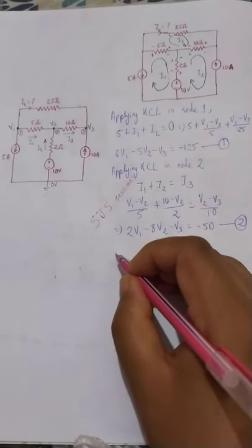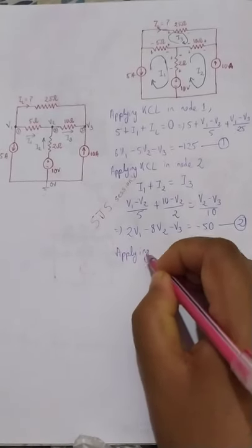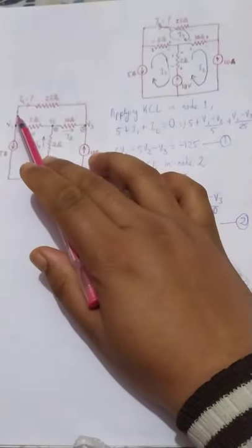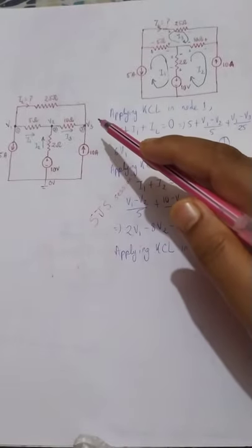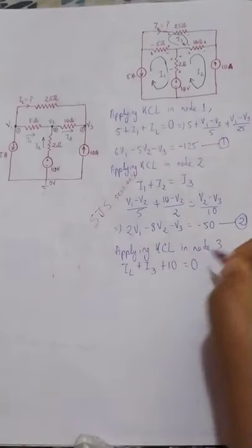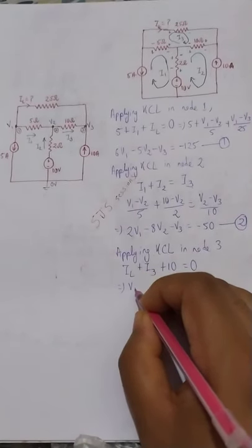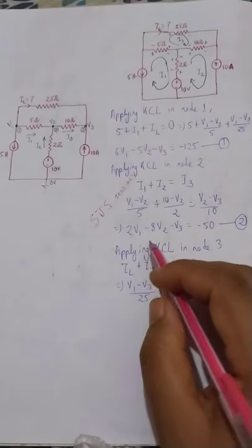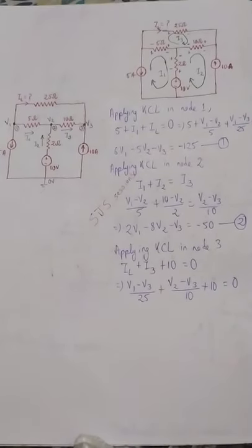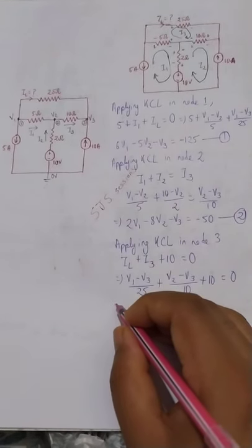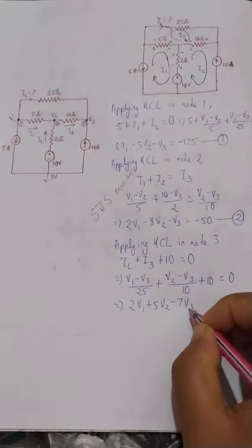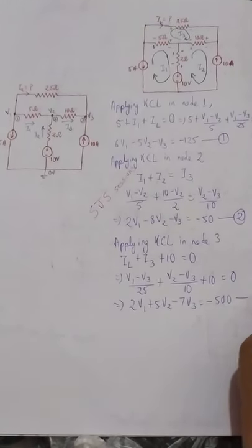Applying KCL at node 3: I3 is incoming, IL is incoming, and the 10 ampere source is also incoming, so all three meet at node 3. Writing: IL + I3 + 10 = 0, which gives (V1 − V3)/25 + (V2 − V3)/10 + 10 = 0. Simplifying gives: 2V1 + 5V2 − 7V3 = −500. This is Equation 3.